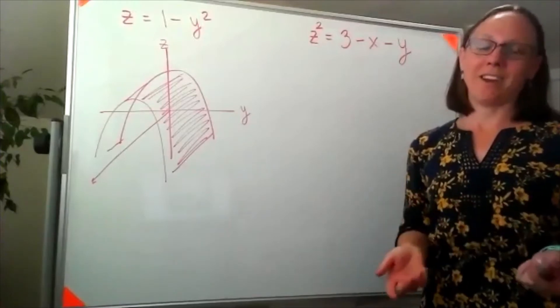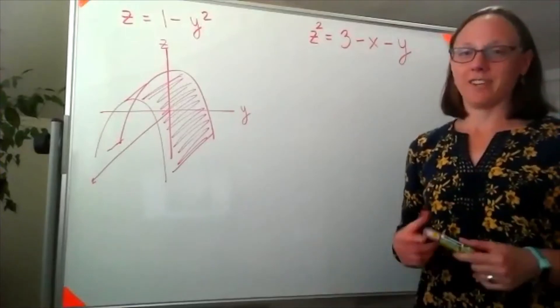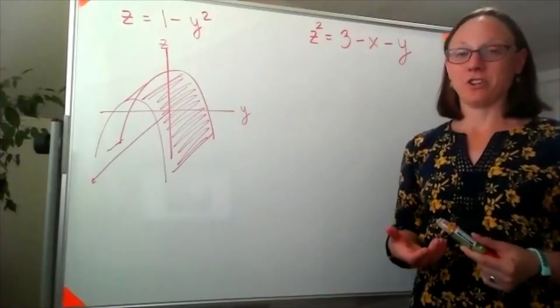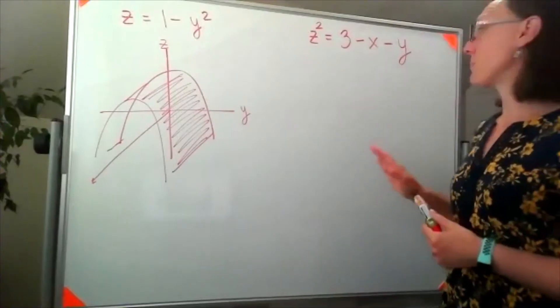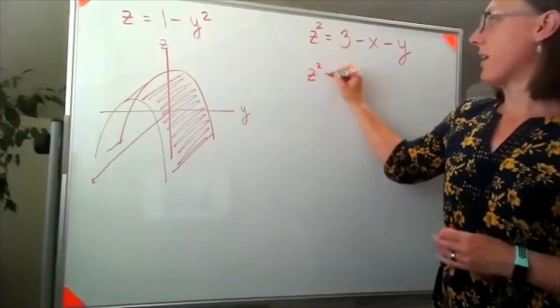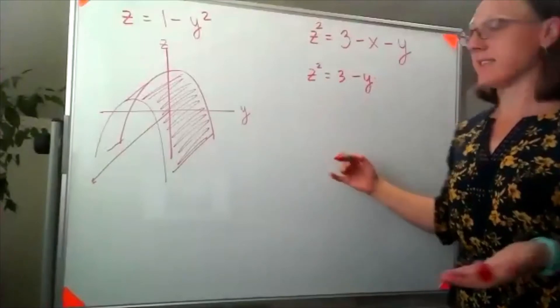So the way that I'm going to start again is by not trying to draw this in three dimensions and instead think about drawing it in two dimensions. So if I let X be 0, then this would look like Z squared is equal to 3 minus Y, and this I can sketch.